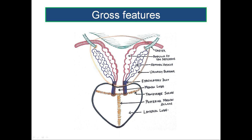The smaller upper part is formed by the median lobe. The lower larger part is divided into two halves by a vertical median sulcus, and this posterior median sulcus separates the two lateral lobes, one on either side.